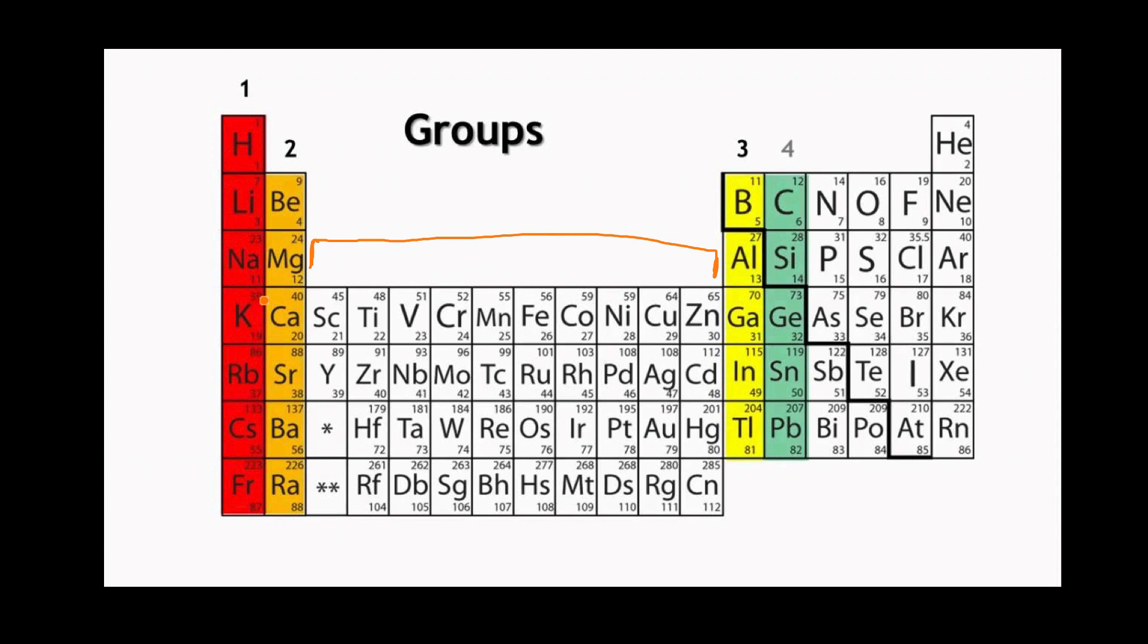The reason is that the transition metals can actually exist with a varying number of electrons in their outer shell. They're able to form ions which have varying charges and therefore they can have varying numbers of electrons in their outer shell. So it's harder to place them into a traditional group.